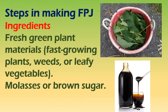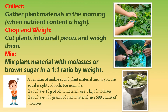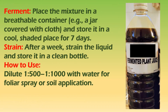To make Fermented Plant Juice (FPJ) fertilizer: collect fast-growing plants like grasses, weeds, or vegetable scraps. Chop them up and place them in a clean container. Add molasses or brown sugar in a 1:1 ratio. Stir well, cover the container, and let it ferment for about 7 to 10 days, stirring occasionally. Once fermented, strain the liquid and dilute it with water 1:500 to 1:1,000 for use as a foliar spray or soil drenching. This natural fertilizer boosts plant growth with essential nutrients and hormones.